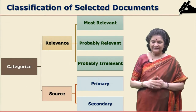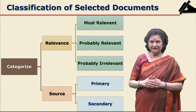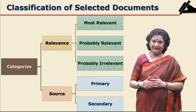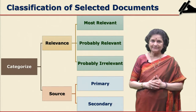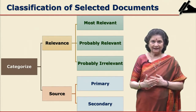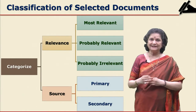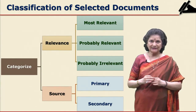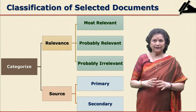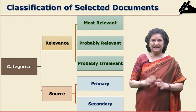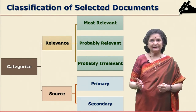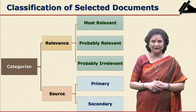When the researcher classifies the documents on the basis of relevance — most relevant, probably relevant, probably irrelevant — the possibility is that at the stage of probably irrelevant, the documents may have to be deleted. It's okay at this stage; later on you can take the decision, but here we can categorize and keep such documents.